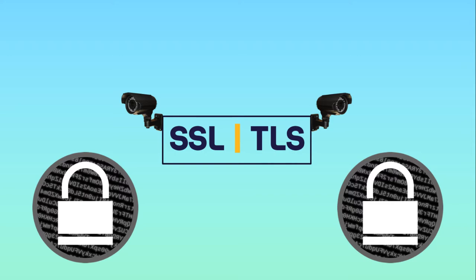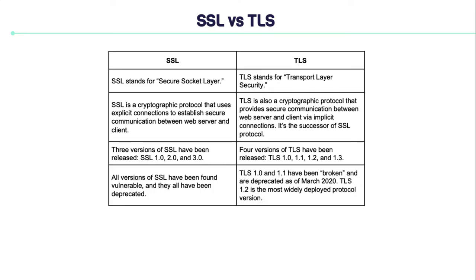We still refer to security certificates as SSL because it's a commonly used term, but when you are purchasing SSL from a company like DigiCert, you are actually buying the most up-to-date TLS certificate, not an SSL certificate. There are three versions of SSL — 1.0, 2.0, and 3.0 — which are all deprecated. For TLS, there are four versions: 1.0, 1.1, 1.2, and 1.3. TLS 1.0 and 1.1 have been broken and deprecated as of March 2020, and TLS 1.2 is the most widely deployed protocol version.